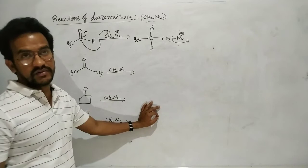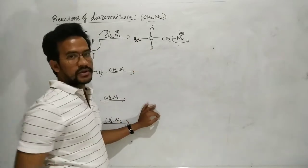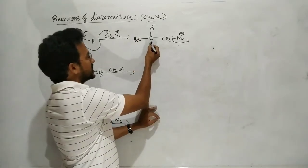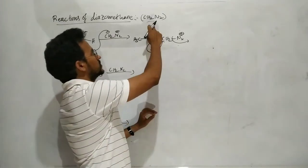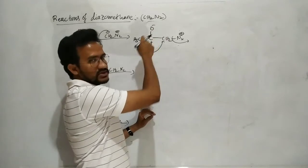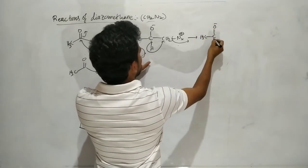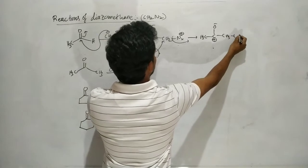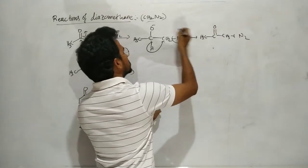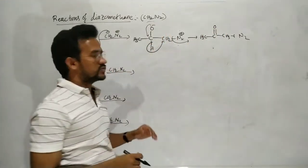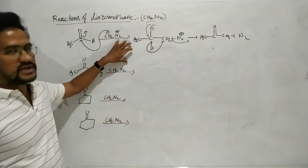N2 is an excellent leaving group, so after N2 leaves, a positively charged carbon forms. Then H⁻ migration (hydride shift) takes place from the adjacent carbon to this carbocation. This gives a new carbonyl compound one carbon higher. So diazomethane converts a lower carbonyl compound to a higher carbonyl compound — for example, acetaldehyde is converted to acetone.